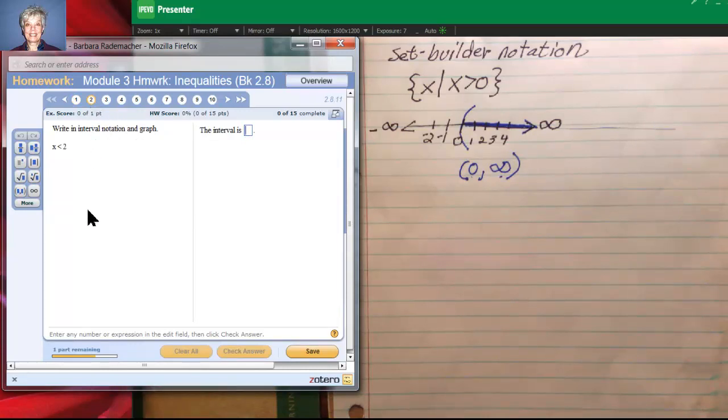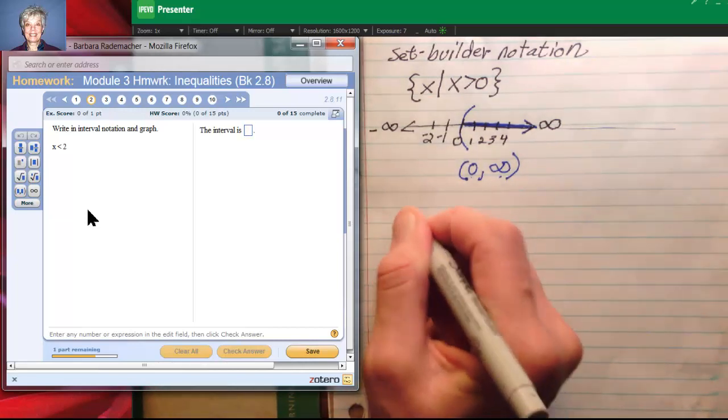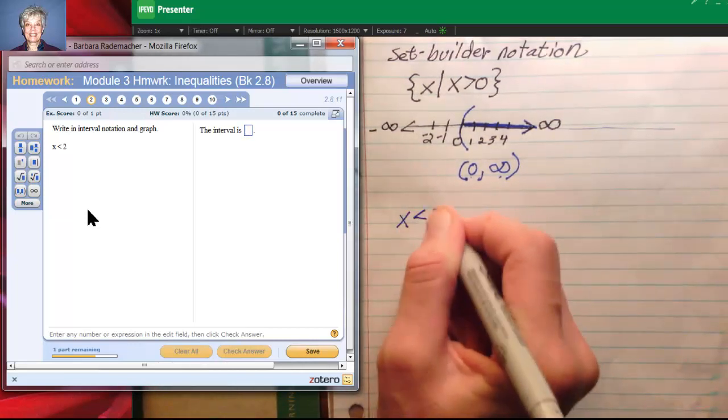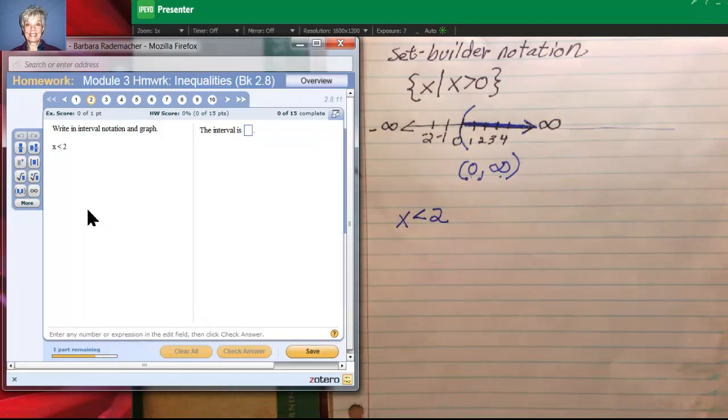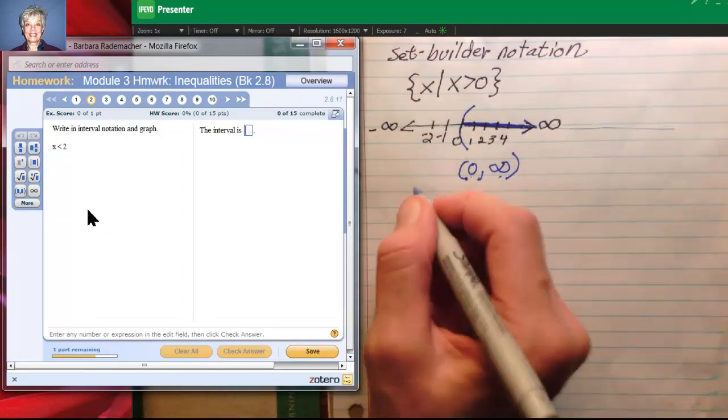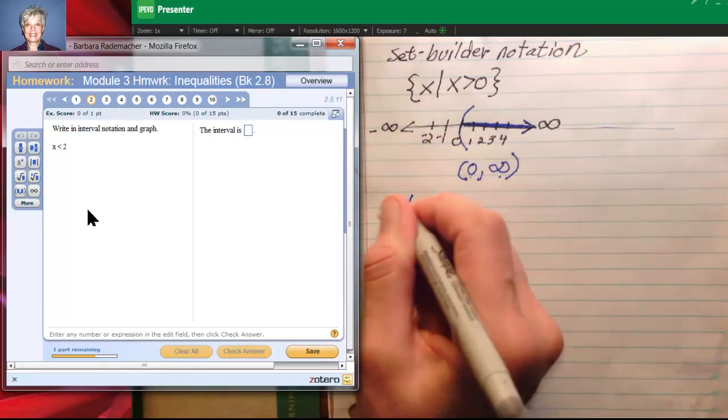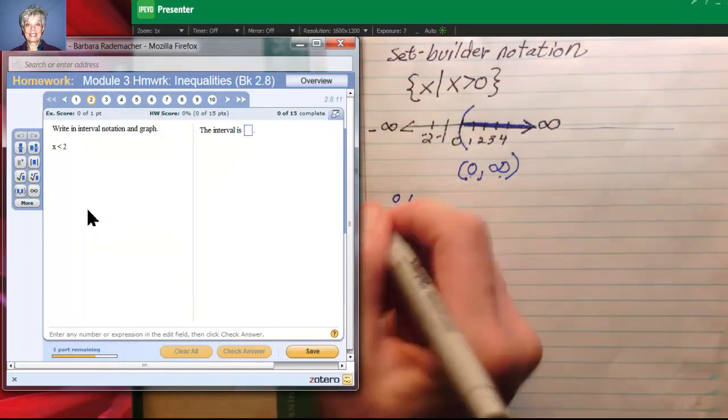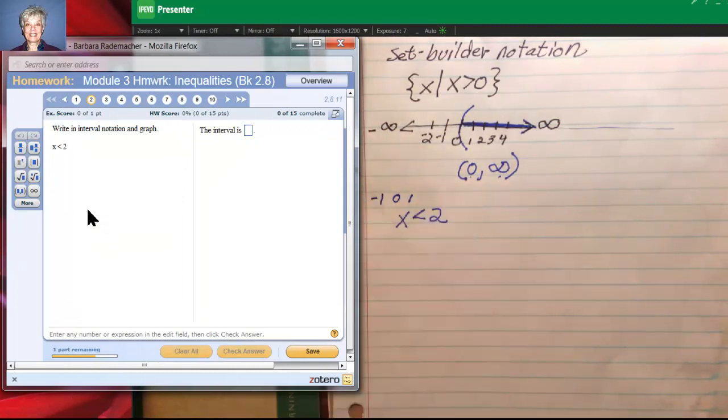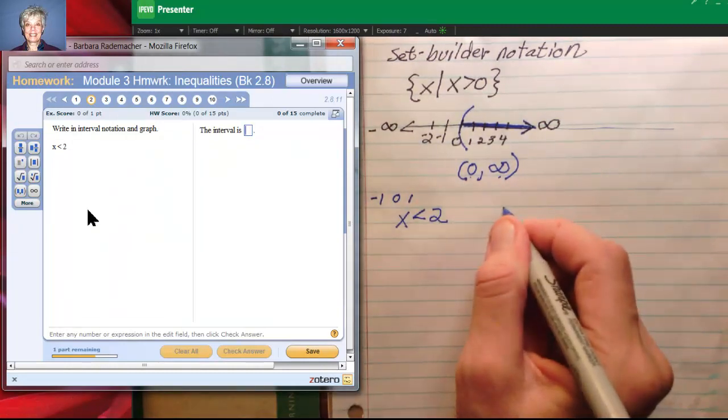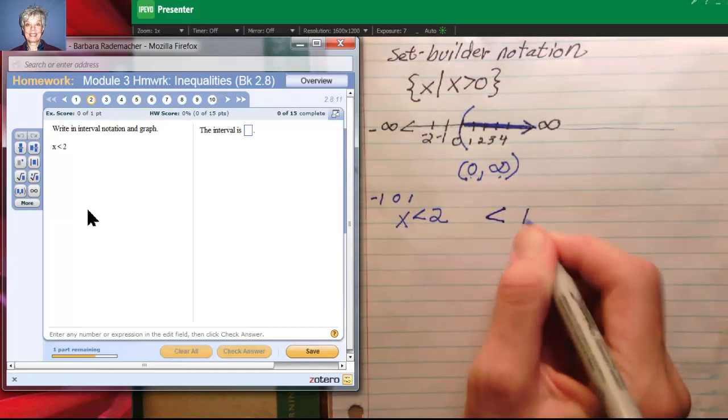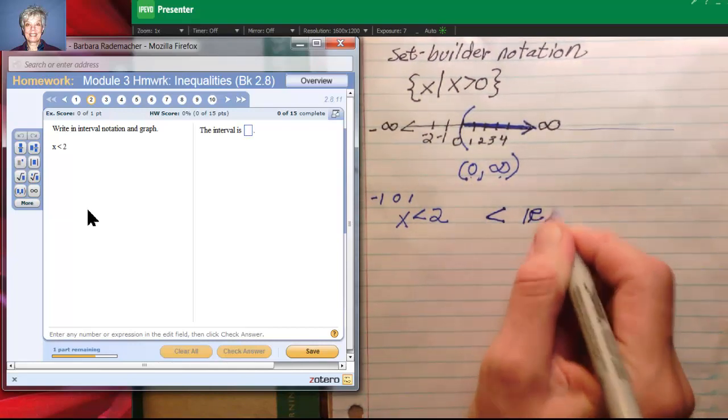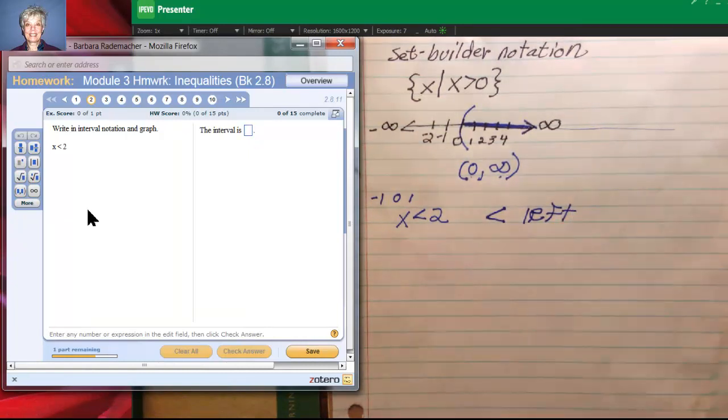It says x is less than 2. I don't know what numbers are less than 2. 1 is less than 2, 0 is less than 2, negative 1 is less than 2. In our number system, less than and left of mean exactly the same thing.